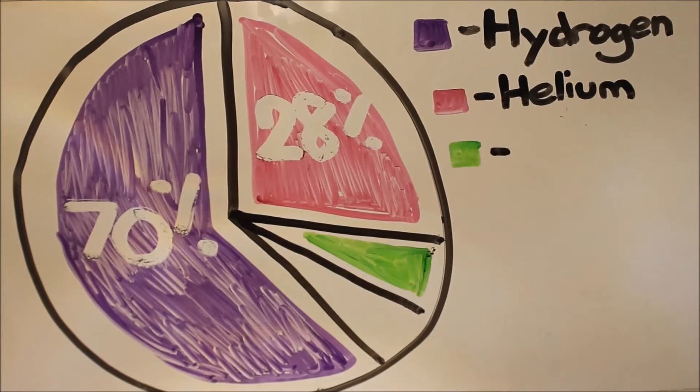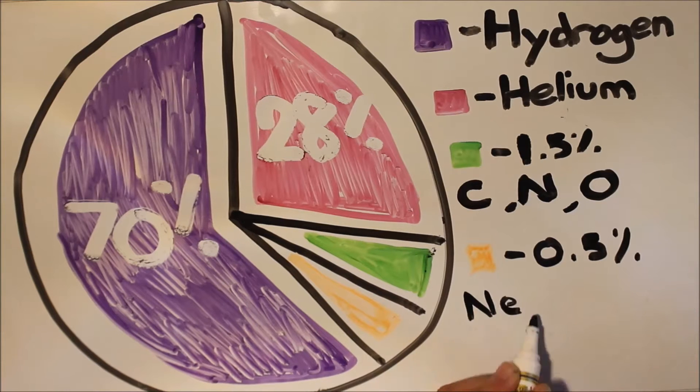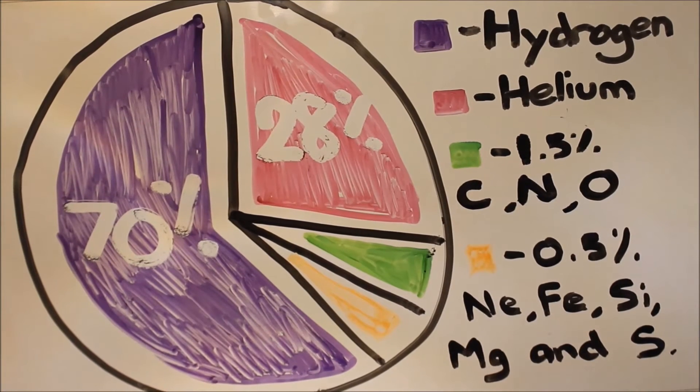Carbon, nitrogen and oxygen make up 1.5% and the other 0.5% is made up of small amounts of other elements such as neon, iron, silicon, magnesium and sulphur.